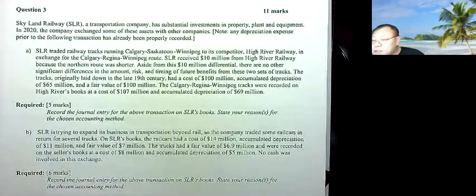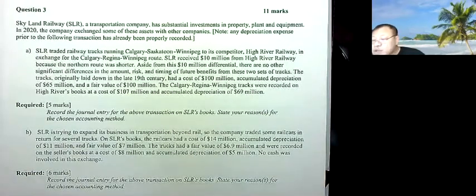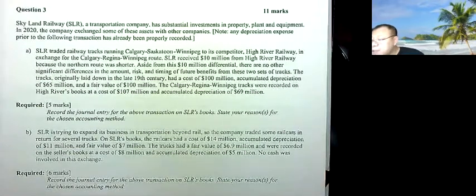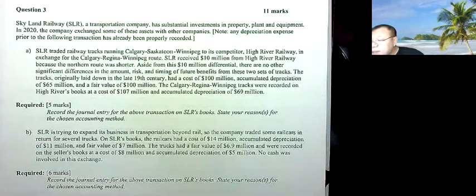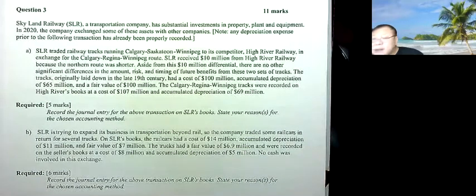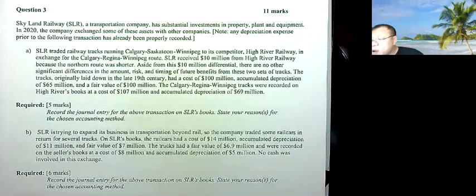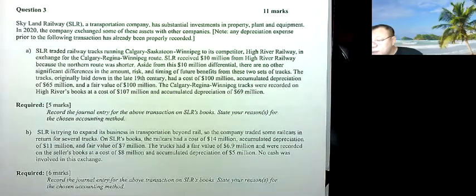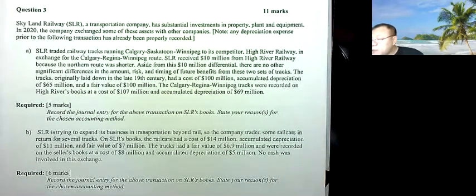In 2020, the company exchanged some of these assets with other companies. SLR traded railway tracks running Calgary-Saskatoon-Winnipeg with competitor High River Railway in exchange for the Calgary-Regina-Winnipeg route. SLR received $10 million from High River Railway because the northern route was shorter. Aside from this $10 million differential, there are no other significant differences in the amount, risk, and timing of the future benefits from the two sets of tracks.